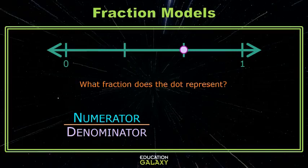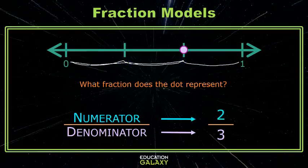Our whole is divided into three spaces. One, two, three spaces. That's your denominator. Now, we're being asked about the dot. The dot is two spaces over. One space, two space. So, two-thirds is where the dot is.